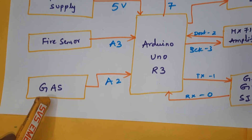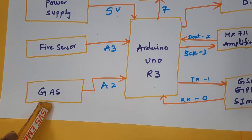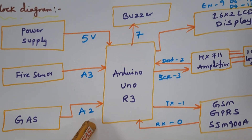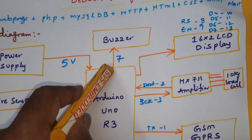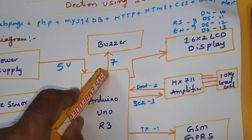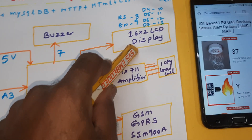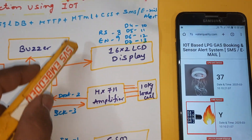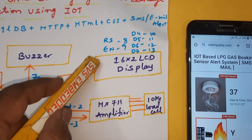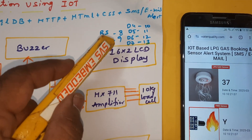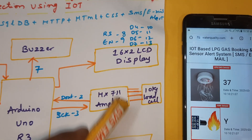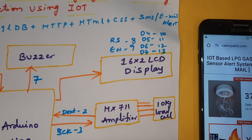The MQ2 smoke sensor is connected to analog pin A2. The alarm is connected to pin 7. The 16x2 LCD character display is connected with RS, Enable, D4, D5, D6, D7 on GPIO pin numbers 8, 9, 10, 11, 12, 13.